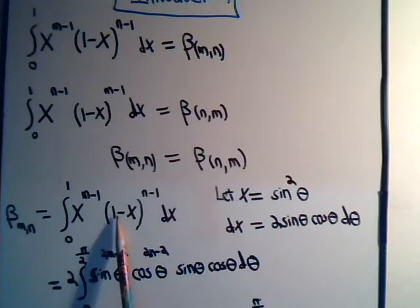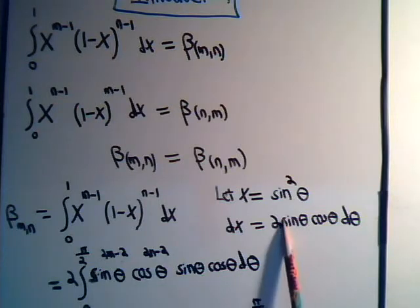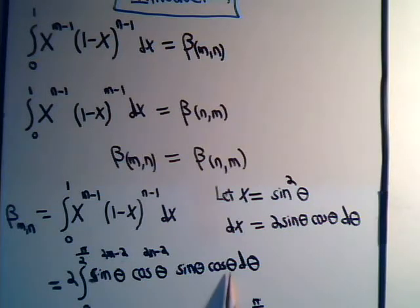Here, I have 1 minus the sine squared of theta, but that's going to be the cosine squared of theta to this power. I get the cosine of theta to the 2m minus 2, times this, take the 2 to the outside, and now I have sine theta, cosine theta, d theta.